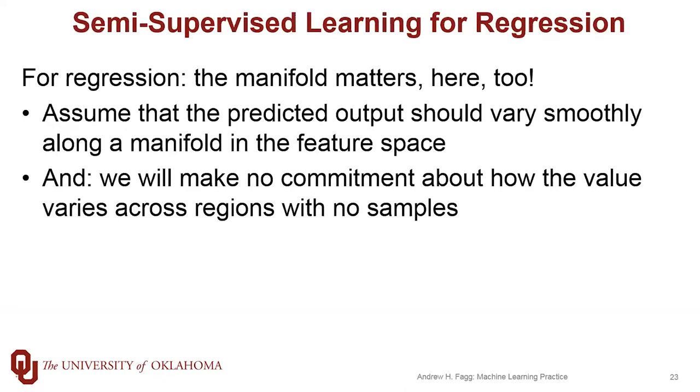And manifolds play an important role on the regression side as well. So what we're going to do is make an assumption that the value that we're going to be producing and predicting should vary smoothly, not necessarily in our full feature space, but certainly along the manifold that our samples live within. And then in particular, we're not going to make any commitment as to what happens in parts of the space where we don't have any samples. So those regions that live between our manifolds.